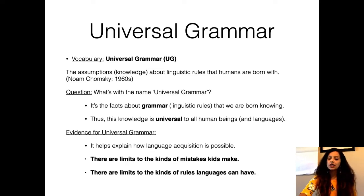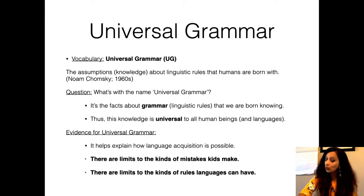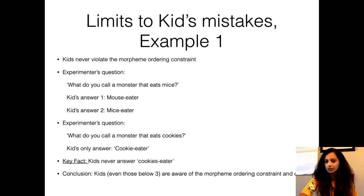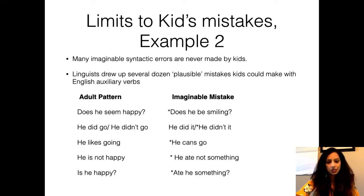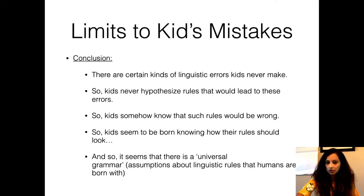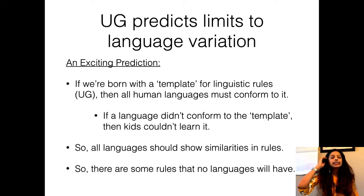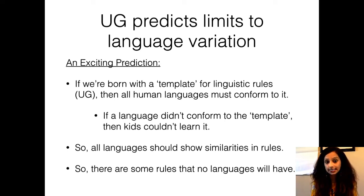The exciting thing about universal grammar is that you can actually test the limits of the kinds of mistakes that children can make, as well as the limits to the kinds of rules that languages can have. We looked at the limits of children's mistakes and saw examples from the morpheme order constraint. We looked at two examples from limits to kids' mistakes — that children do not make certain kinds of linguistic errors that we actually expect them to make. The second kind of evidence for universal grammar is what we are going to talk about in today's video.